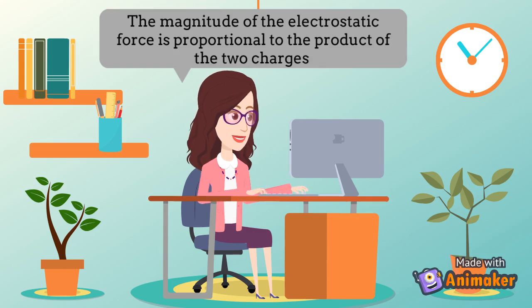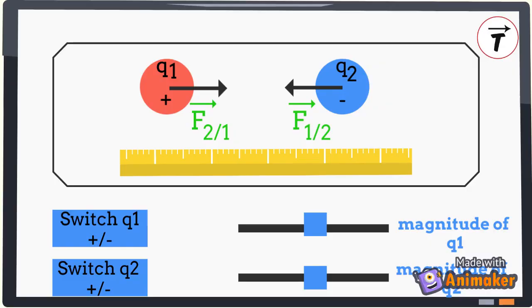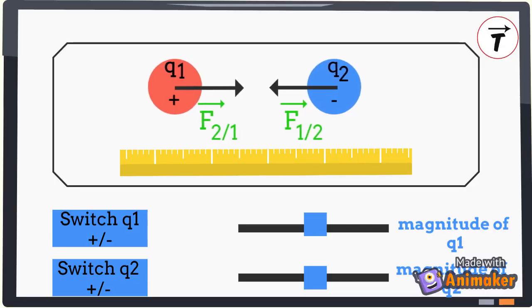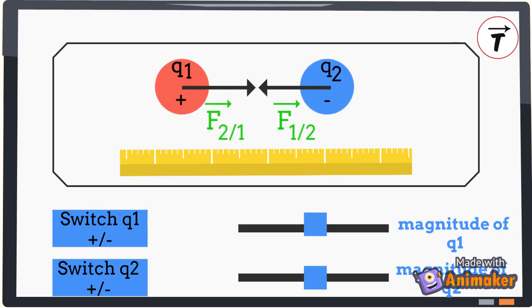Can you think of another factor affecting the magnitude of this force? When the charges are brought closer, that is, the distance between them decreases, the magnitude of the electrostatic force increases.